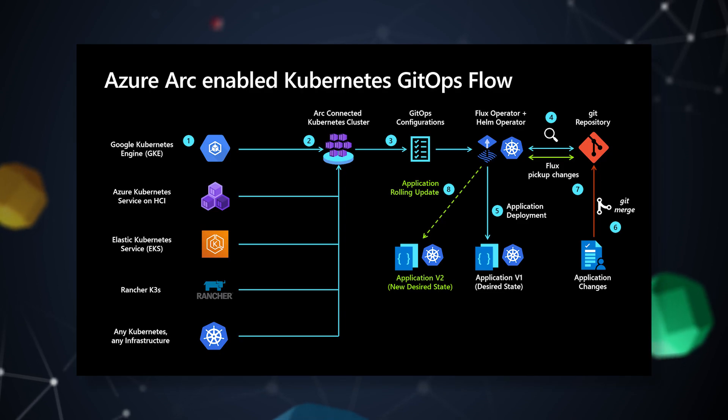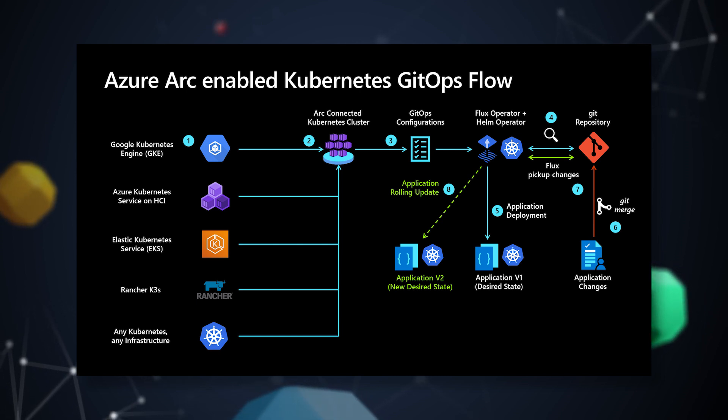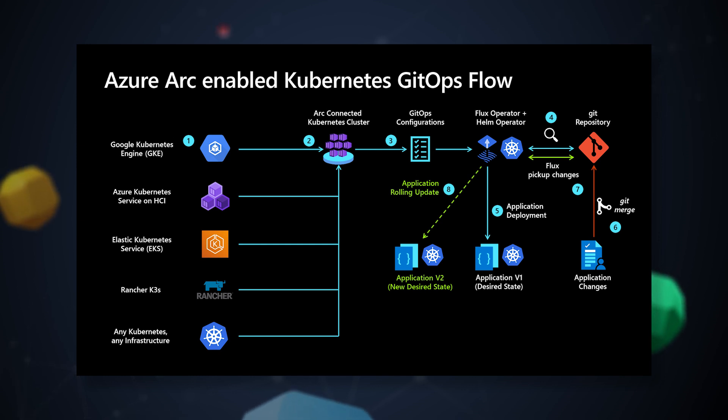GitOps configuration means you have a single source of truth for your application — a GitHub repository (or equivalent) that holds the Kubernetes manifests used to deploy the application. GitOps configuration points to that source of truth, and every time there's a change to that repository, the Flux agent deployed on the Kubernetes cluster captures it. This creates a flow of rolling upgrades, so you can take advantage of blue-green deployments and canaries.